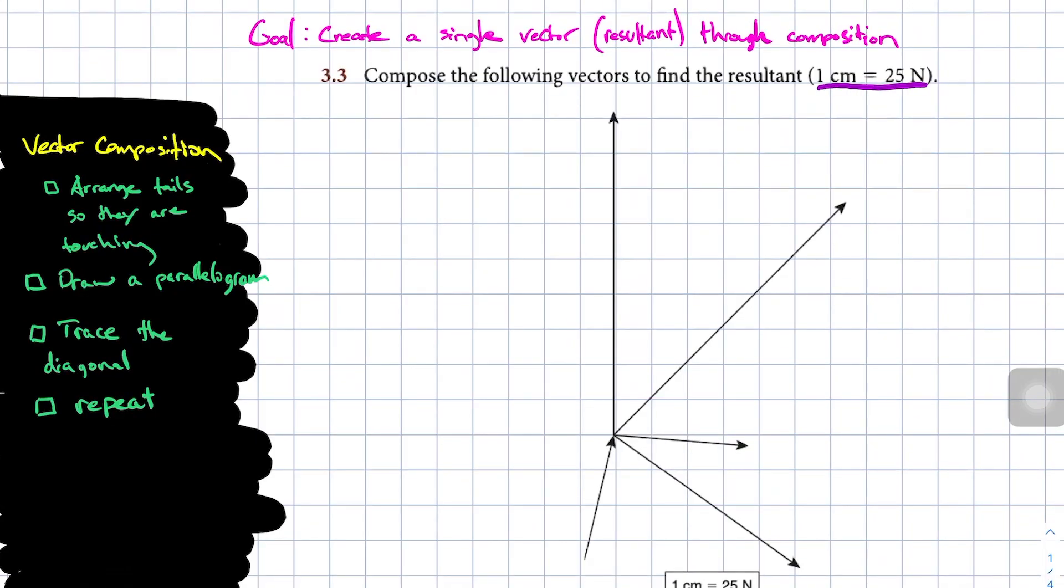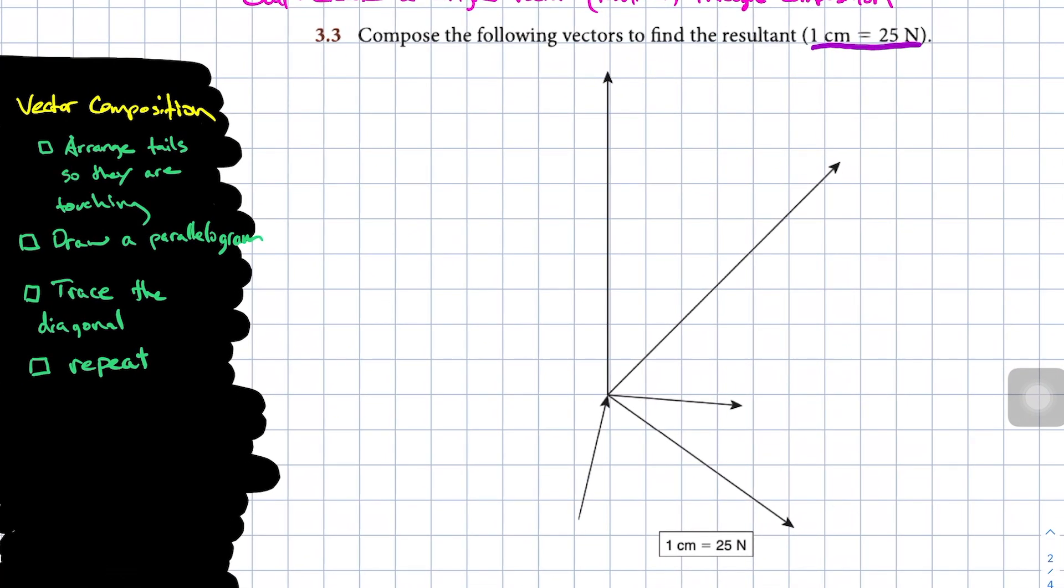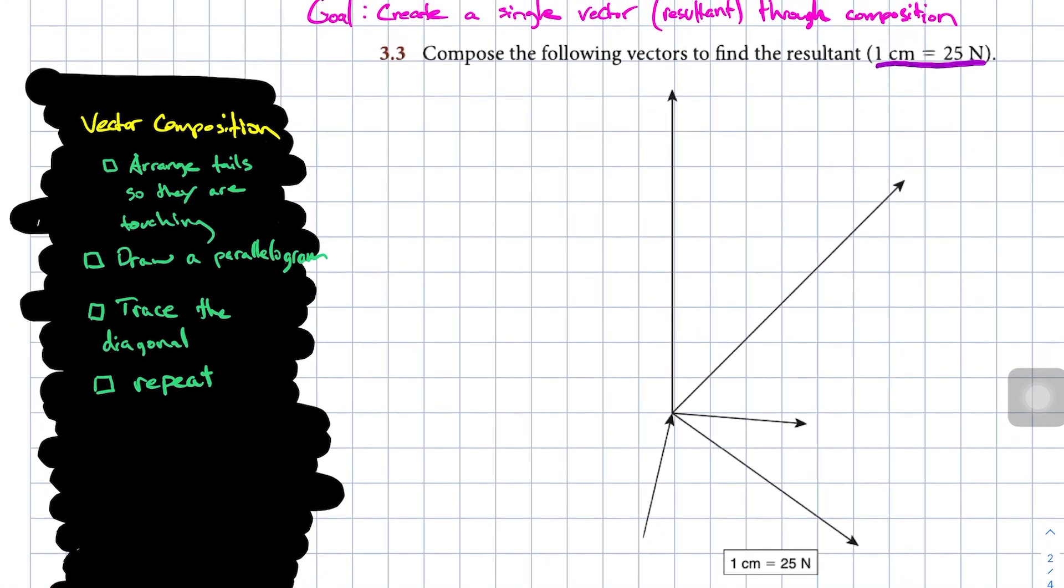So the goal here is to create a single resultant vector through composition and there's a couple different ways to do vector composition. We can create a parallelogram or we can create a chain just like we did for vector resolution. So I'll show you both methods.